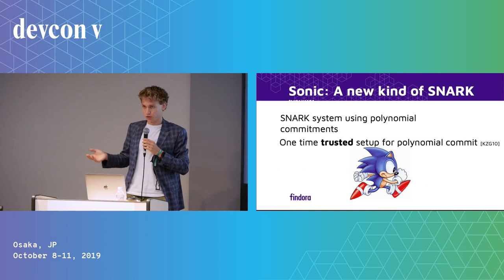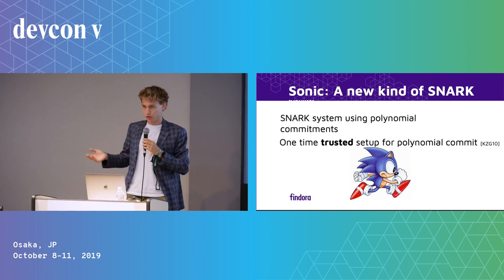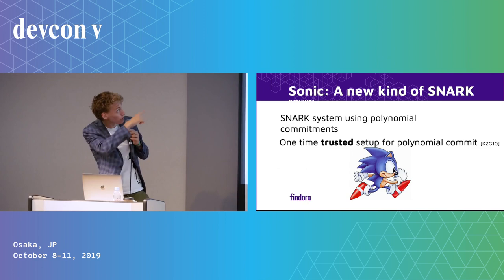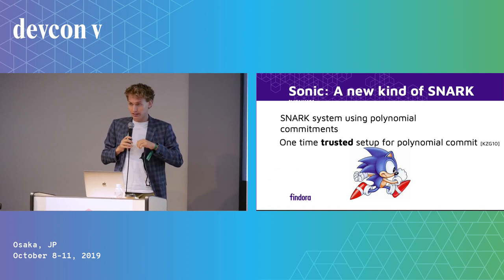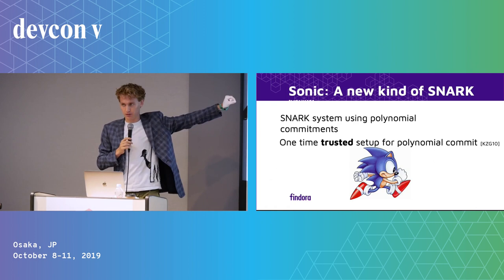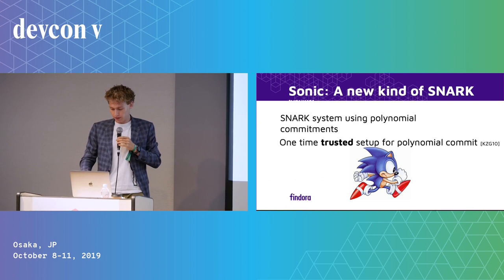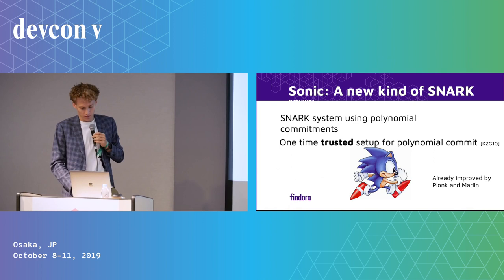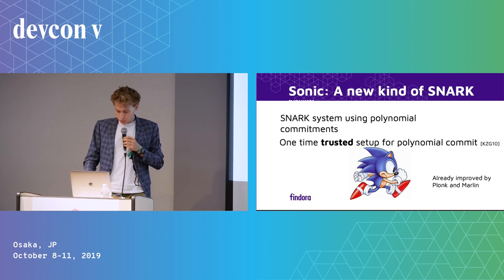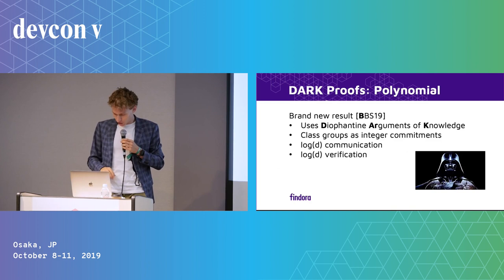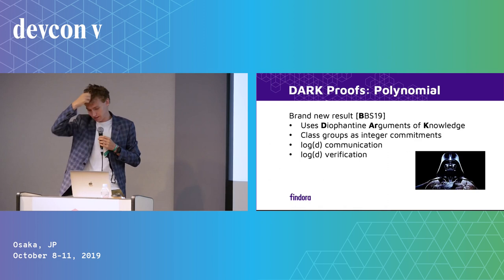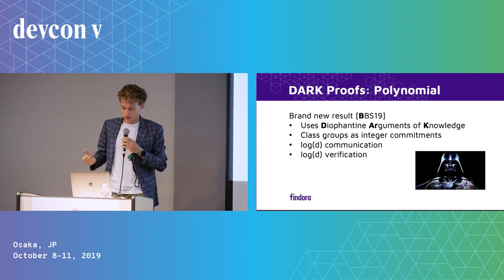Recently there was a cool new proof system called Sonic — a new kind of SNARK by Mary Mahler, Chambault, and others — which is a SNARK system that uses a polynomial commitment scheme. It still has a trusted setup, but the trusted setup is only for the polynomial commitment scheme; nothing else requires it. It's also universal, so it removes the problem of needing a new trusted setup per circuit. It got further improved by new proof systems called PLONK and Marlin. What we do is build a new polynomial commitment scheme using so-called Diophantine arguments of knowledge over integers — that's why we call it DARK — using class groups, with logarithmic communication and verification time, and most importantly, no trusted setup.